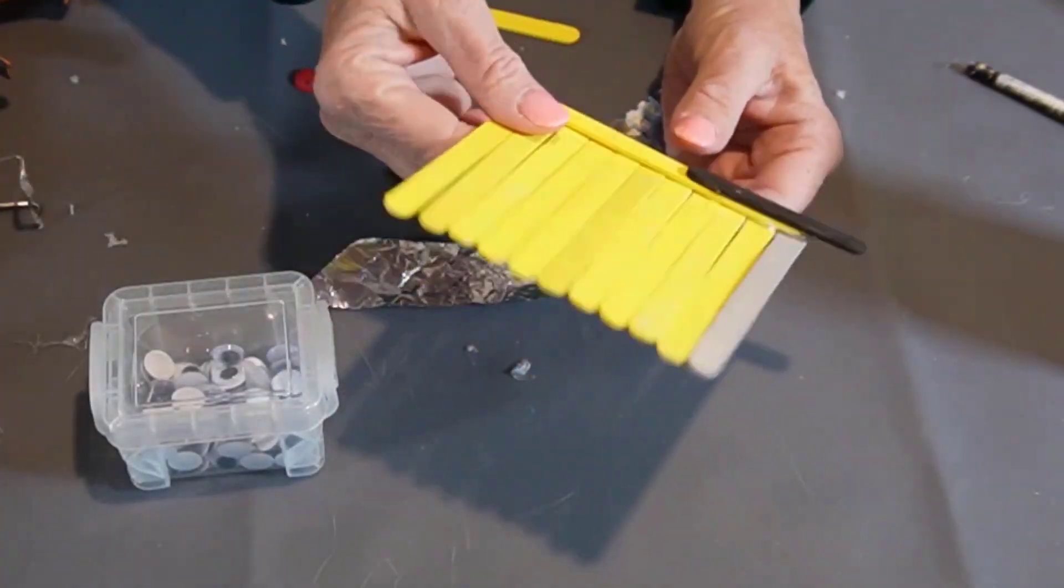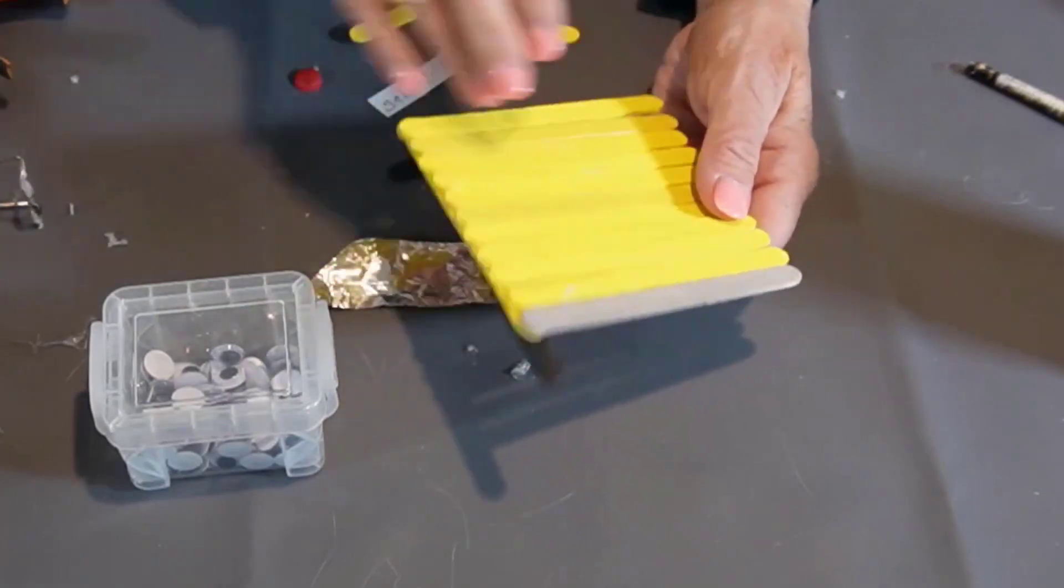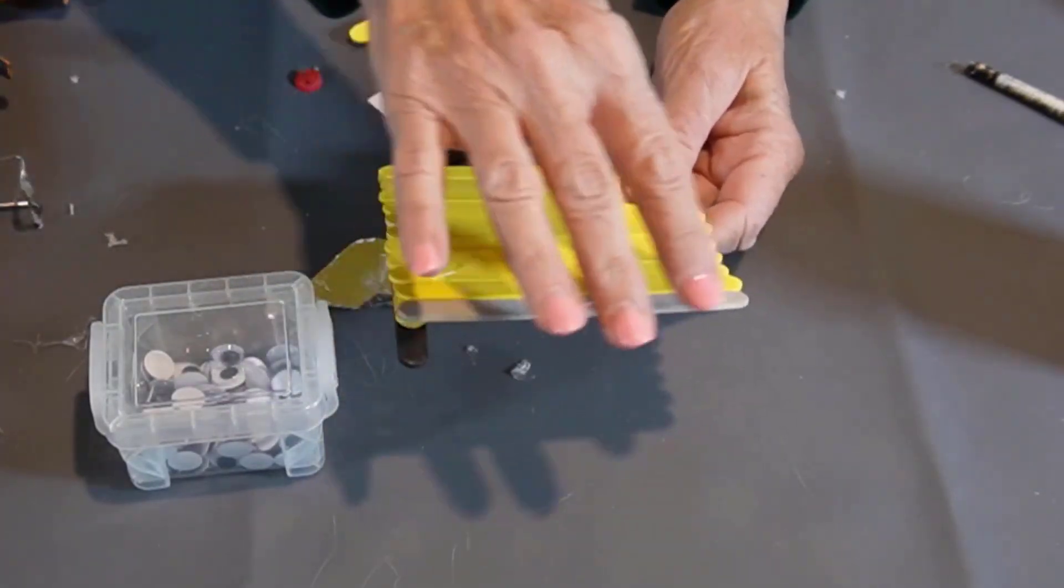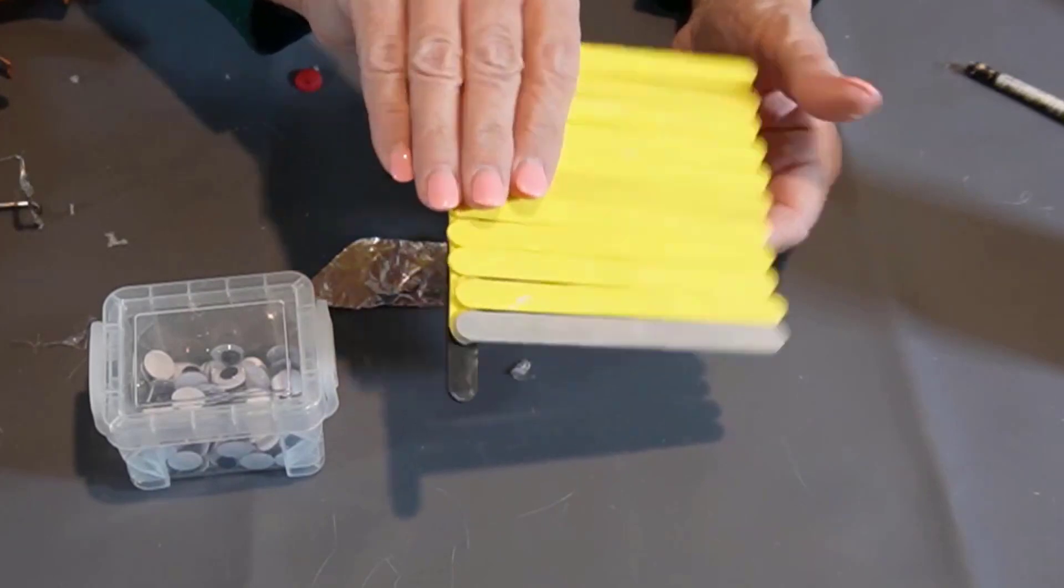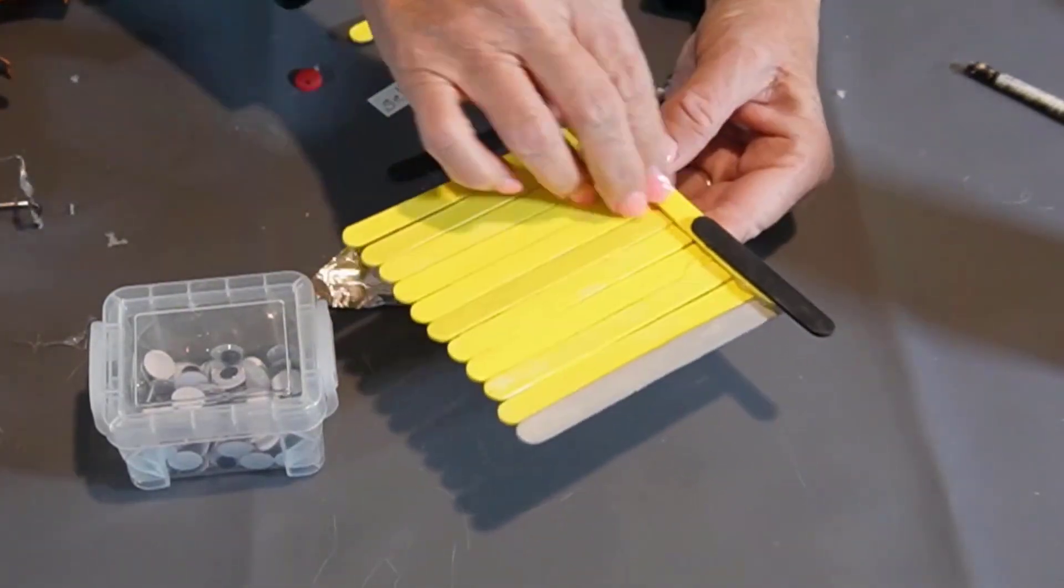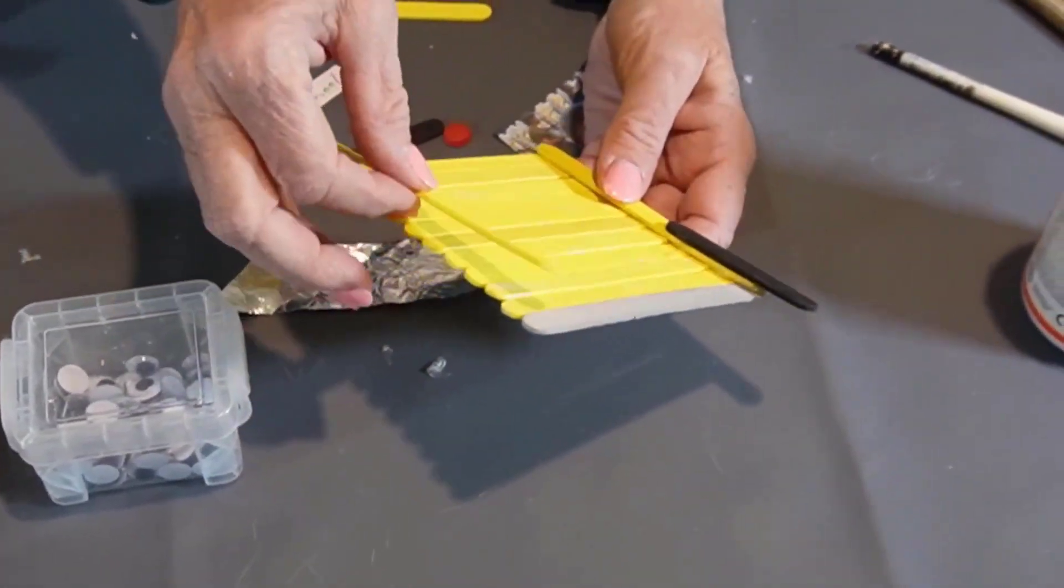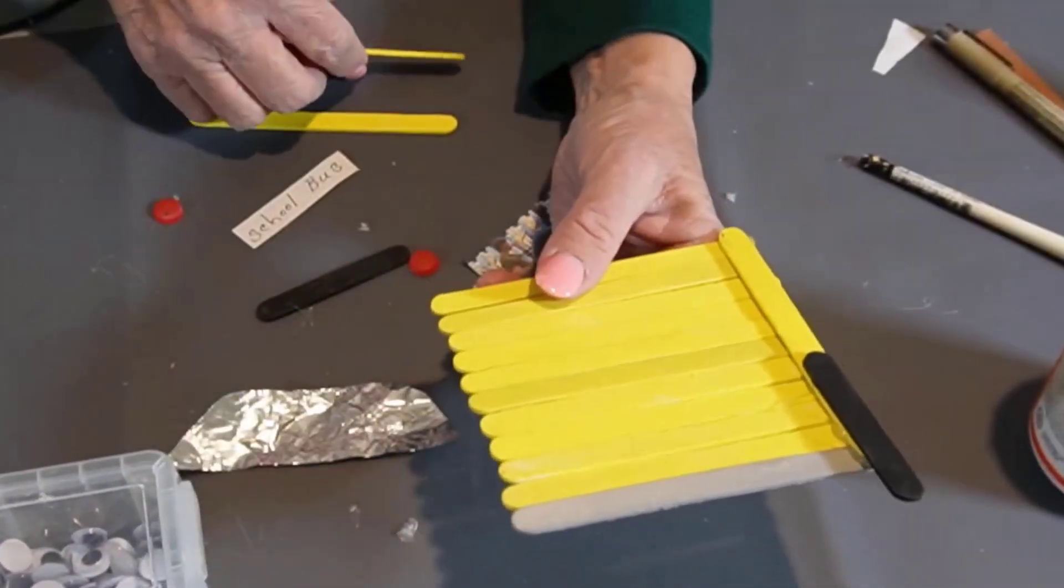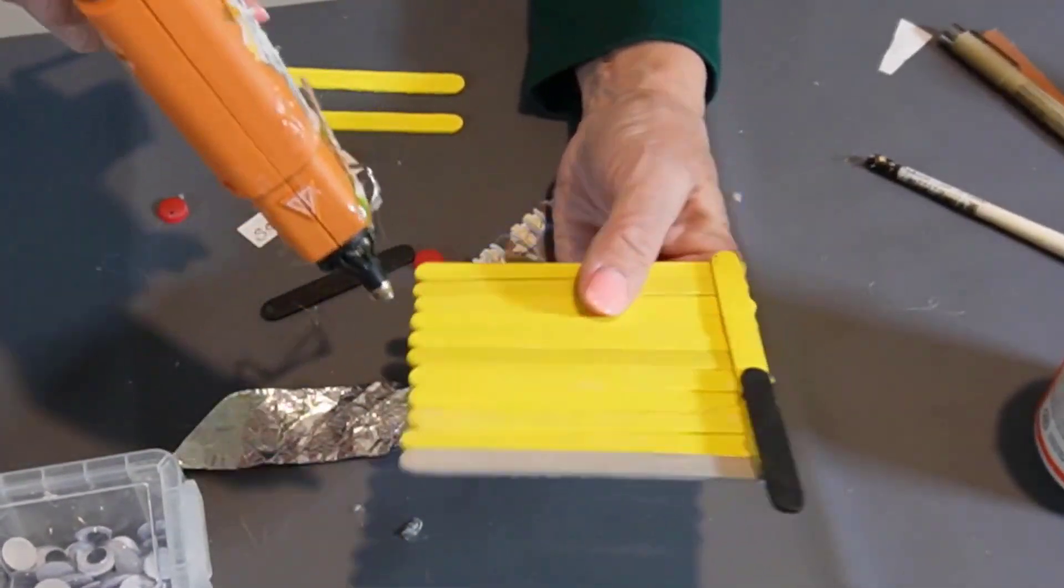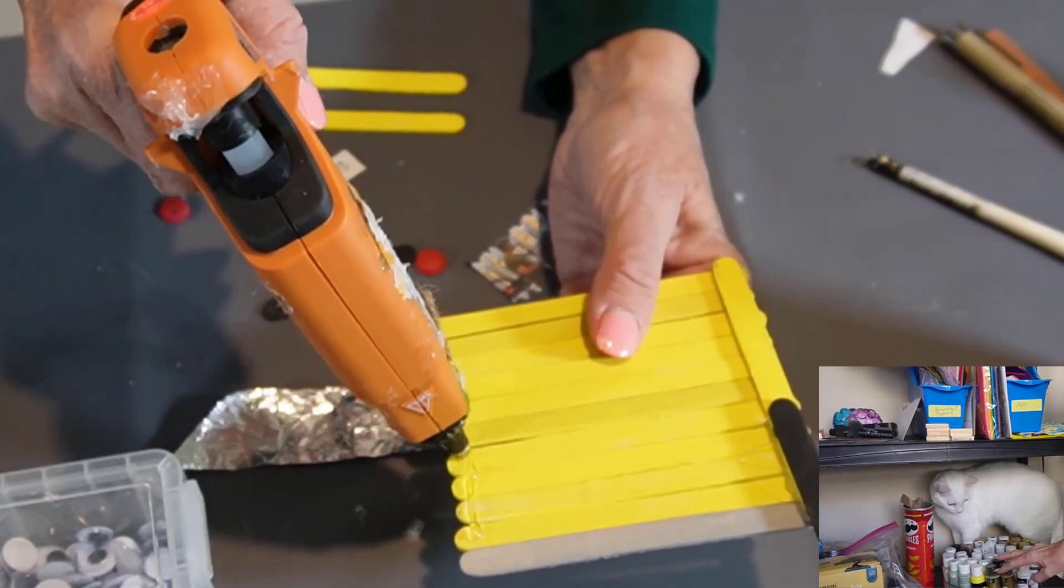Now I have already glued some of this together. I glued the yellow ones horizontally and also the gray ones horizontally. I attached them to the side with one popsicle stick, and so I'm going to just put the other popsicle stick on the other side using glue gun.